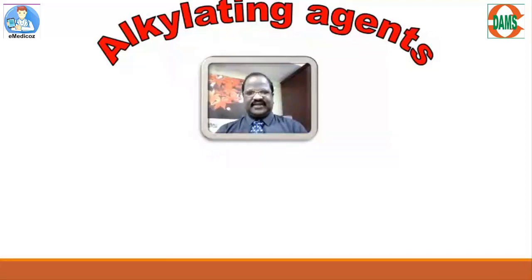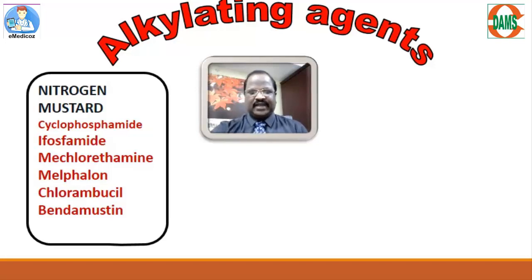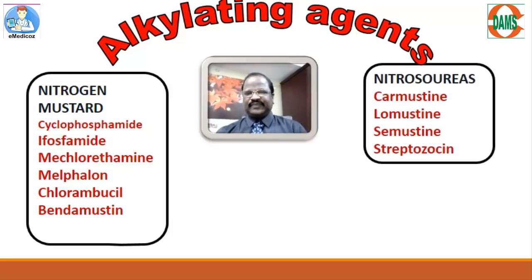In this video we will discuss alkylating agents, a group of anti-cancer drugs. Examples for various alkylating agents: the nitrogen mustard group includes cyclophosphamide, ifosfamide, mechlorethamine, melphalan, chlorambucil, and bendamustine. Another class of alkylating agents is nitrosoureas, examples of which are carmustine, lomustine, semustine, and streptozocin.